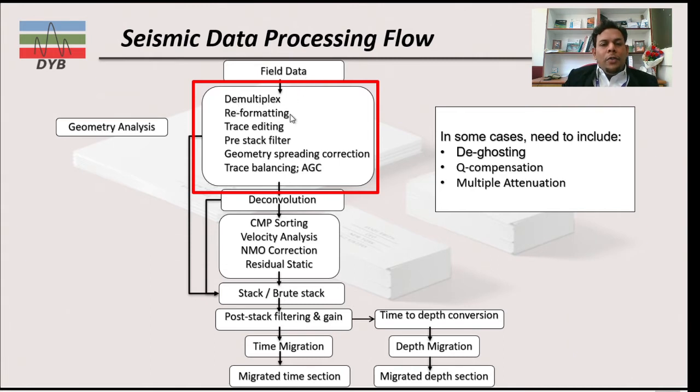Then we have reformatting. In the recording system, this is already built in, but sometimes you have to convert your data from one format to another format which is desired for your software to process. Then we have trace editing, pre-stack filters, geometric spreading correction, trace balancing and AGC. This part is the second module. Today in this video, we are focusing on demultiplex and reformatting.